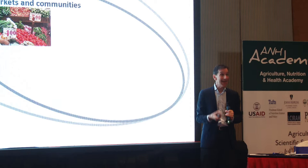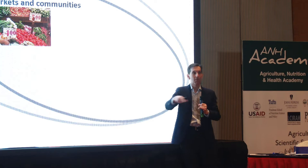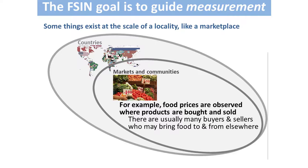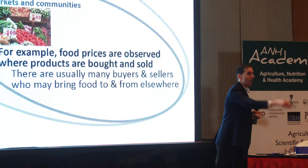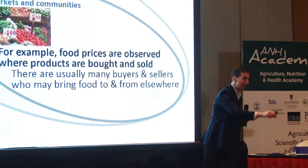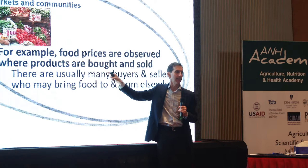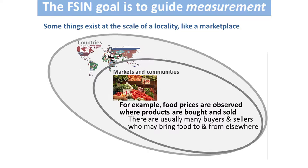A second kind of data exists at a locality — a place within Nepal, like a marketplace. The most fundamental thing at this level is a price. A price exists at a place and time: if I go to this market on this day to buy lentils, this market will be one price, that market will be another. There is no such thing as 'the Nepal price' — there is only the price in a given market on a given day. It is fundamentally a community level fact.